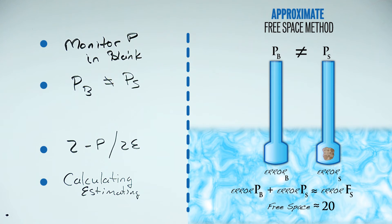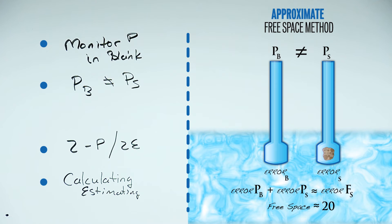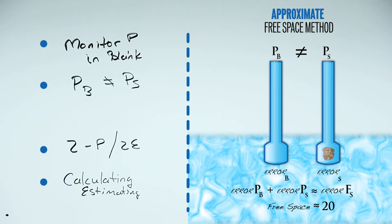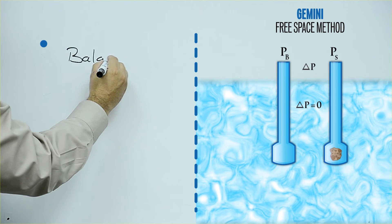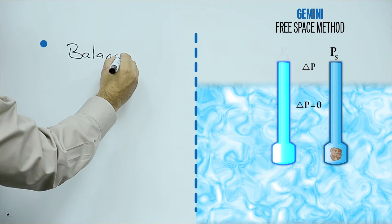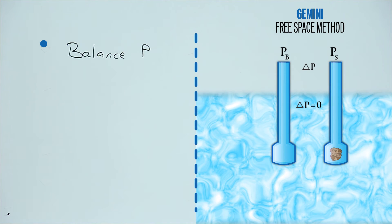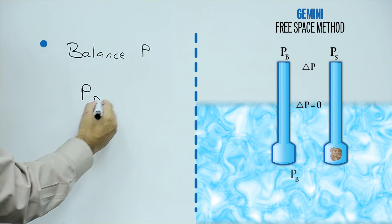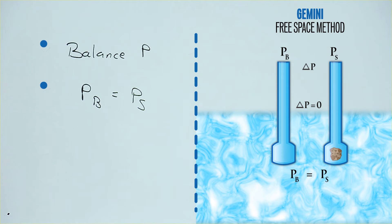Now we can compare that to the Gemini method for free space control. In the Gemini method, we balance pressure on both sides — both the blank and the sample side. Since we're balancing pressure on both sides, the pressure on the blank side equals the pressure on the sample side.